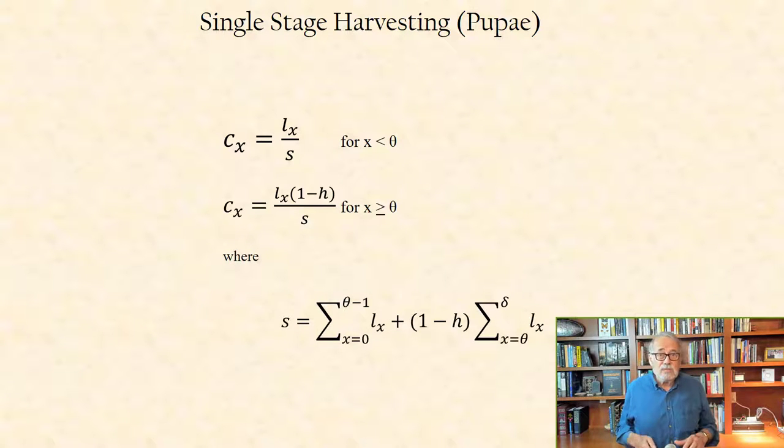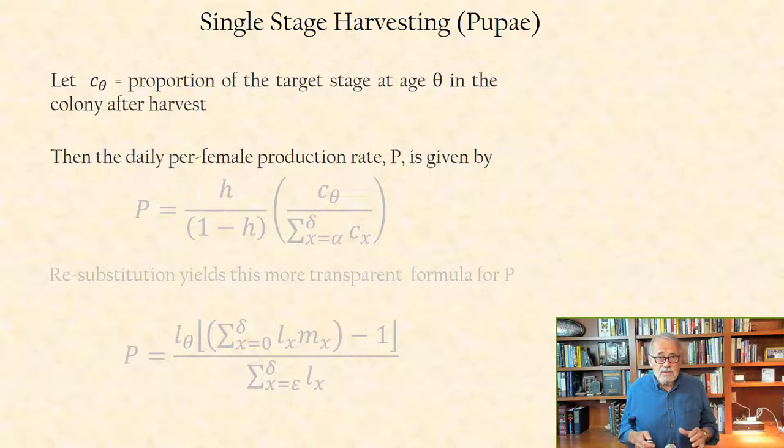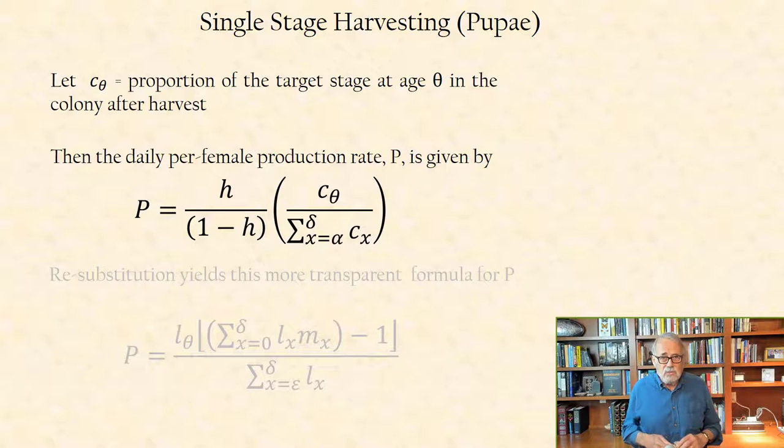Production rates can be computed in two steps. If C theta is the proportion of the target stage at age theta in the colony after harvest, then the daily per-female production rate, P, is given by this equation, where epsilon denotes the age of eclosion.